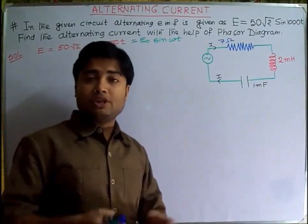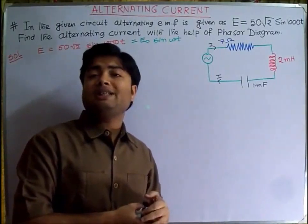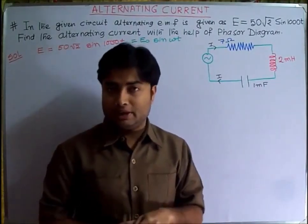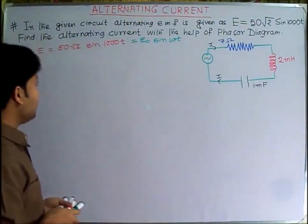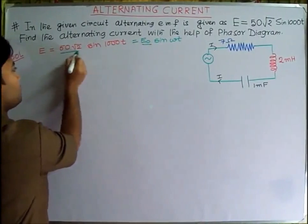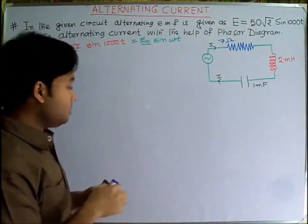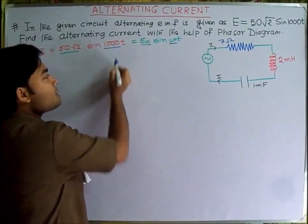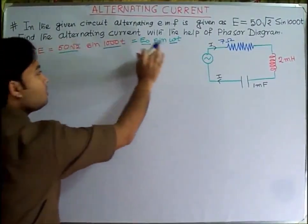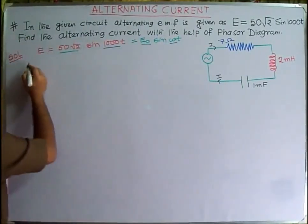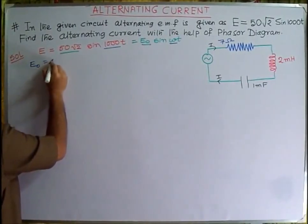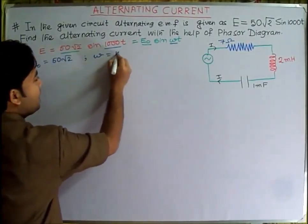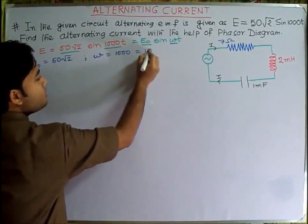From this comparison we can state that E0 is equals to 50 root 2, and the value of ω is equals to 1000, or 10 to the power 3 radians per second.